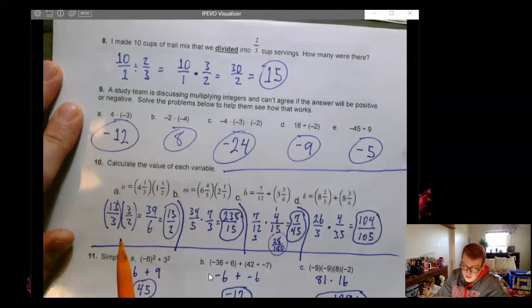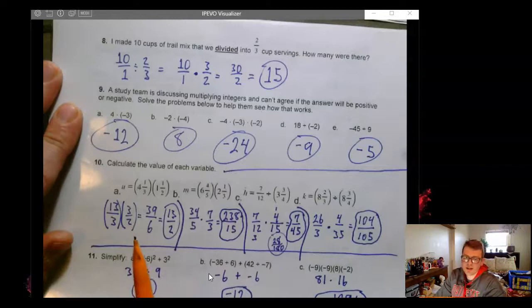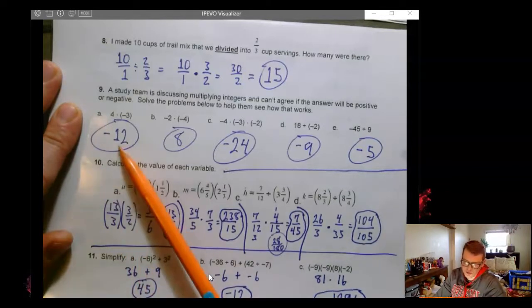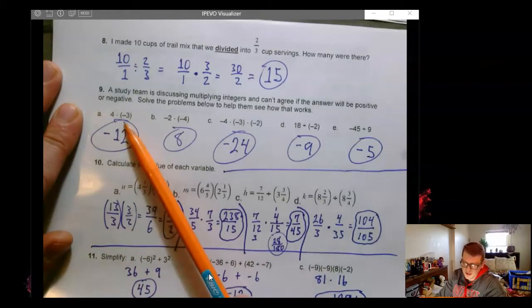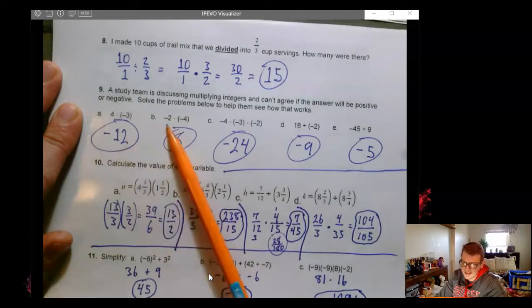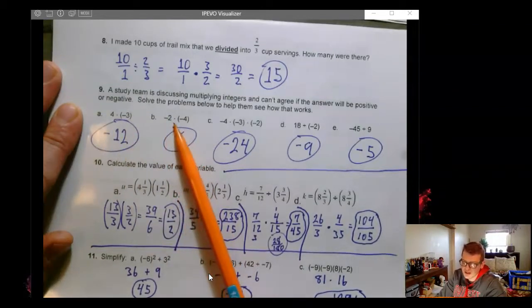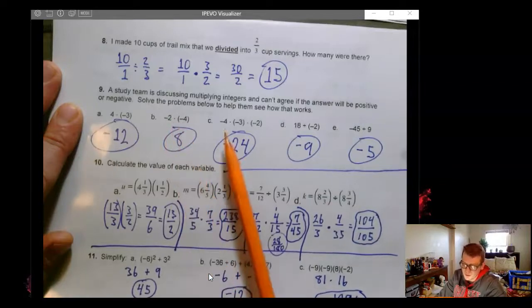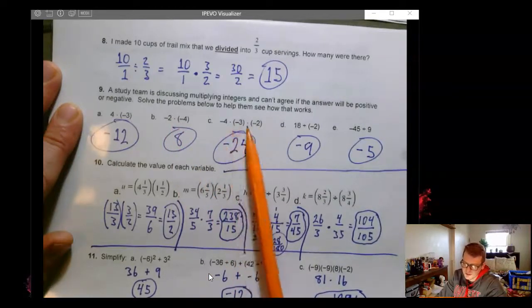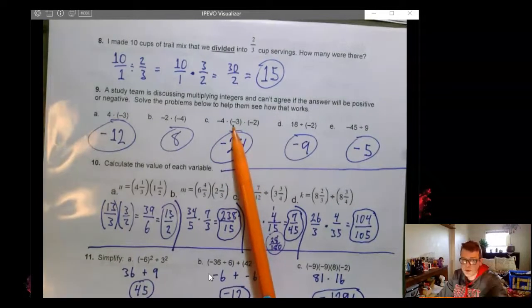Number nine is just checking. Do we remember positive and negative multiplication and division rules? So positive times a negative is negative. A negative times a negative is positive though, because remember the opposite of a negative becomes positive. When we have three negatives, two of them will cancel out. Remember,